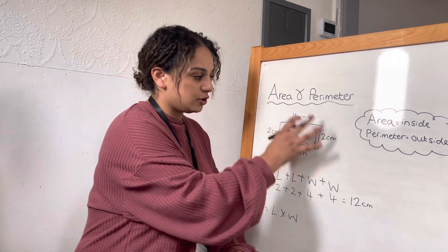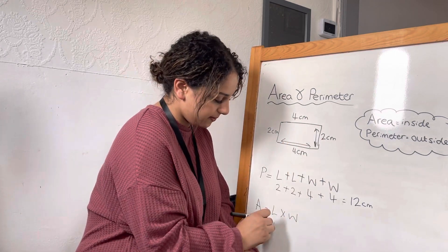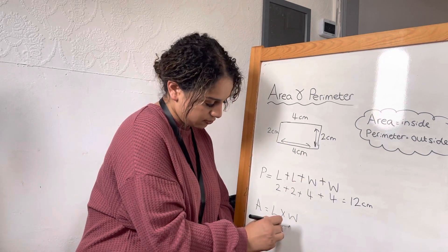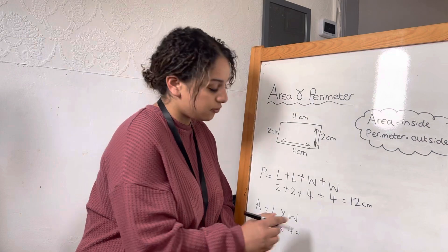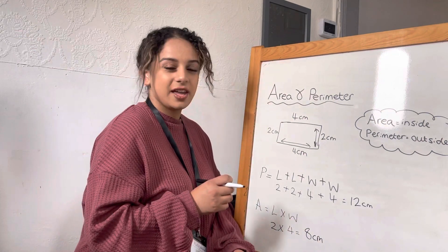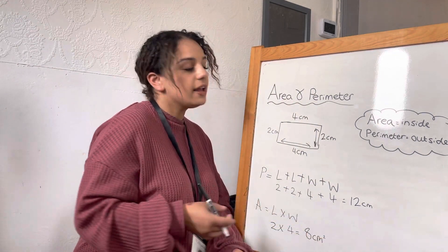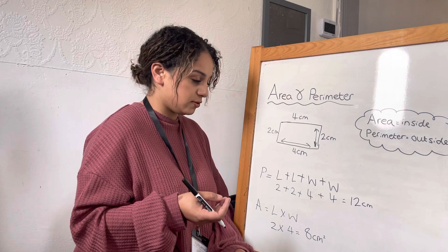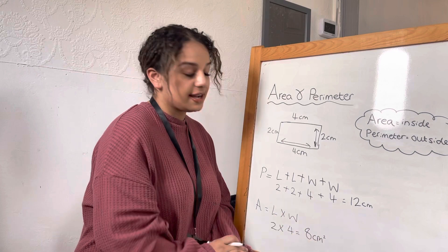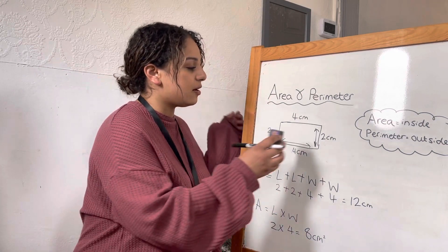Area is a little bit different — you do your length times your width. So you don't need to look at every number; you just look at your one length, which is two, and your width, which is four, and then you do two times four, which is eight centimeters. When you are doing area, you need to put a little number two — that's your squared sign — and that just shows that you're calculating the area of your shape.